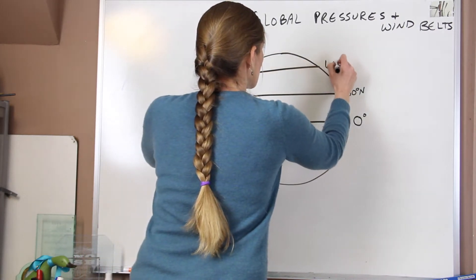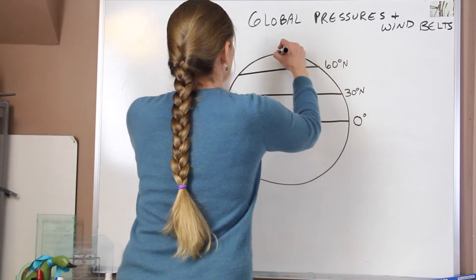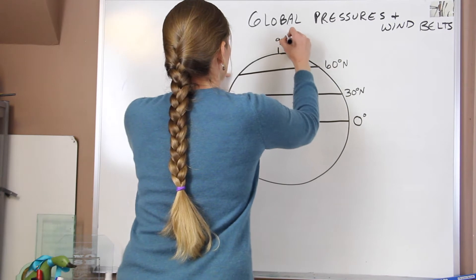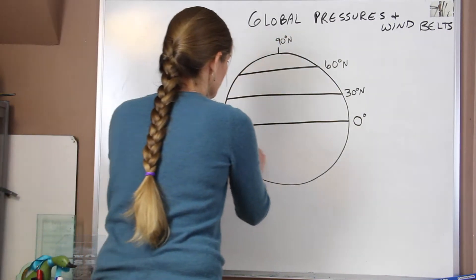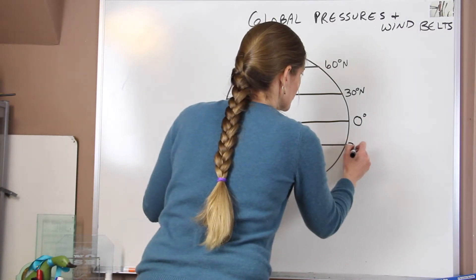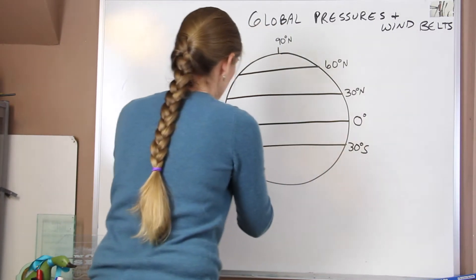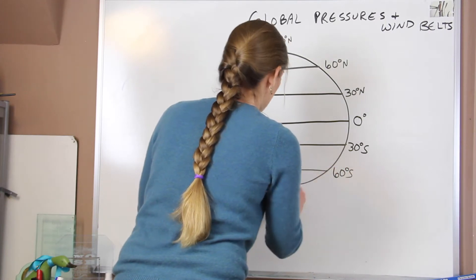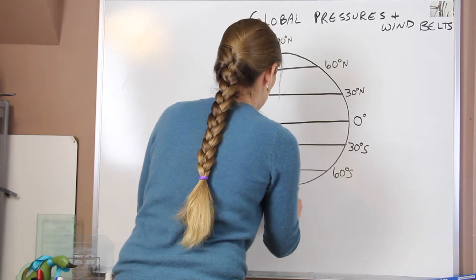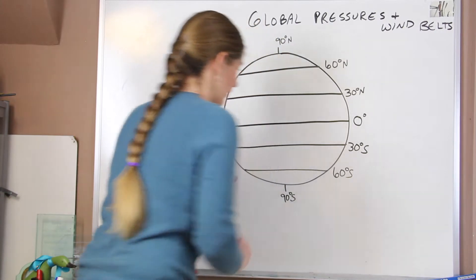We have 60 degrees north latitude. And at the tippity top, we have 90 degrees north or north pole. Same thing happens in the southern hemisphere, but it's 30 degrees south latitude, 60 degrees south latitude, and 90 degrees south latitude.